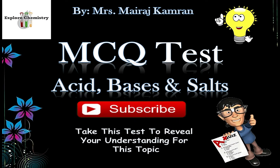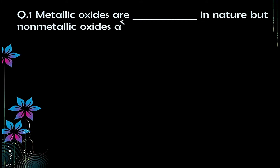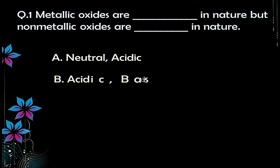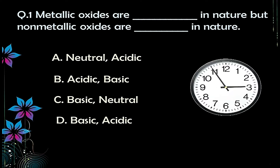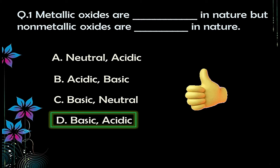Let's start. Question number one: metallic oxides are dash in nature but non-metallic oxides are dash in nature — you have to fill these blanks. Options: A) neutral and acidic, B) acidic and basic, C) basic and neutral, D) basic and acidic. The correct answer is option D — basic and acidic — meaning metallic oxides are basic in nature and non-metallic oxides are acidic in nature.